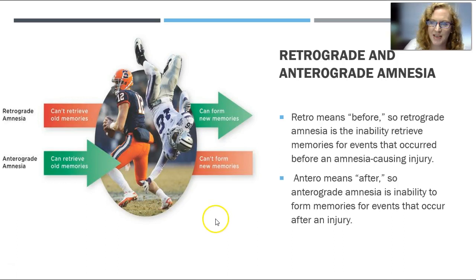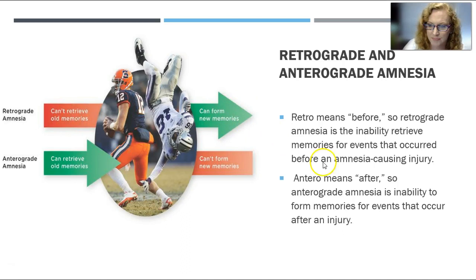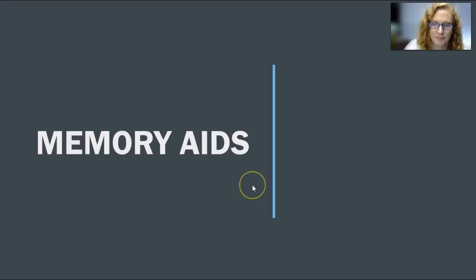I always need some kind of mnemonic device to remember this personally. Retrograde — retro means before. If I say I'm going to dress retro tonight for a party, you'd think she's probably going to wear 70s or 80s attire. So retro means before. Retrograde amnesia is the inability to retrieve memories for events that occurred before an amnesia-causing injury. If I'm playing football and I crack my head, retrograde amnesia means I can't remember the stuff that happened before the event — I can't retrieve the old memories, but I can form new memories. Anterograde means after. Anterograde amnesia is the inability to form new memories after an injury. You can remember the old things, but you can't form new memories.